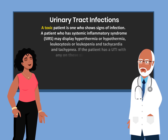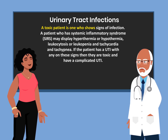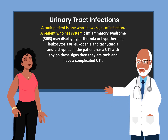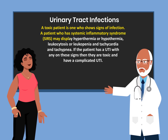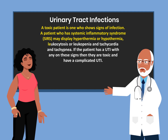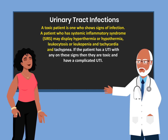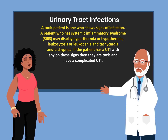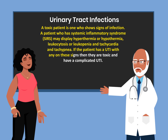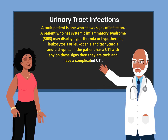A toxic patient is one who shows signs of infection. A patient who has systemic inflammatory response syndrome, or SIRS, may display hyperthermia or hypothermia, leukocytosis or leukopenia, and tachycardia or tachypnea. If the patient has a UTI with any of these signs, then they are toxic and have a complicated UTI.